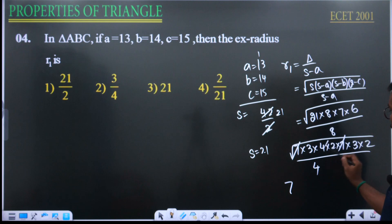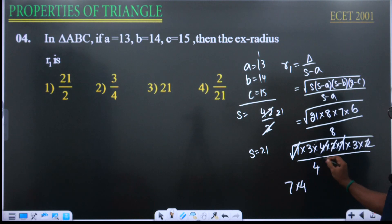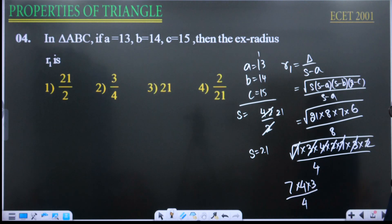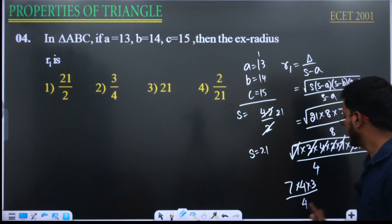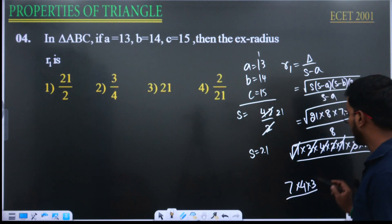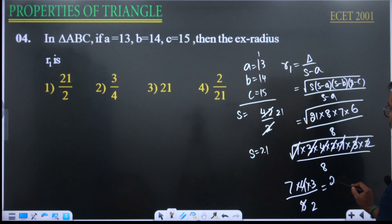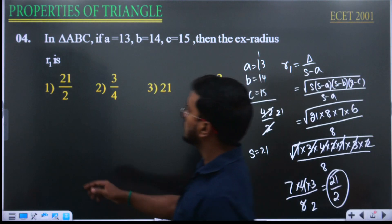Simplifying: 21 equals 7 times 3, 8 equals 4 times 2, 7 is 7, 6 equals 3 times 2. So delta equals root of (7 squared times 3 squared times 4 squared divided by ...). After simplification, r1 equals delta/(s minus a), giving the answer 21/2.